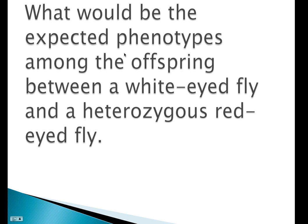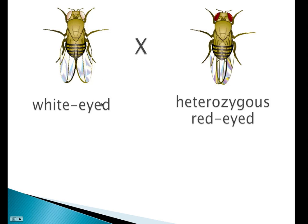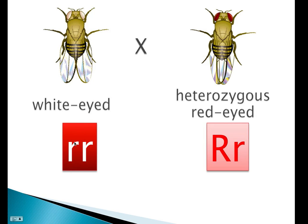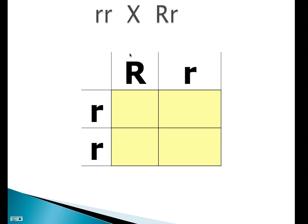So if we do a cross, what would be the cross between a heterozygous red and a white? And what would be the expected phenotypes? So if we have white-eyed crossed with the red eyes, so what we have here is little r, little r crossed with big R, little r. Therefore, if we do a Punnett square, we put big R, little r across the top, which represents the possible reproductive cells from this parent, and little r, little r here.